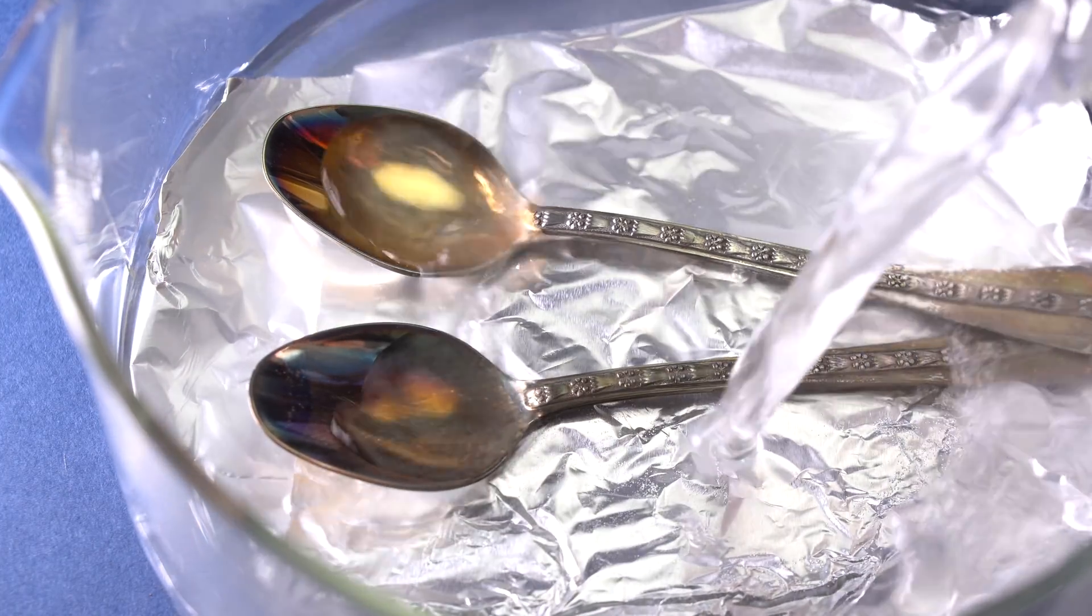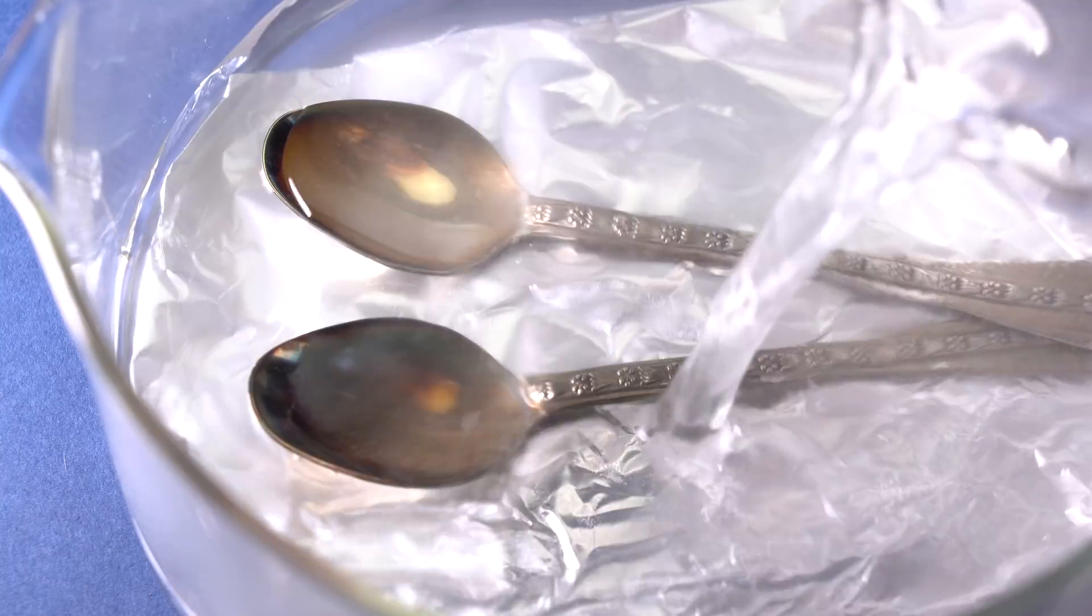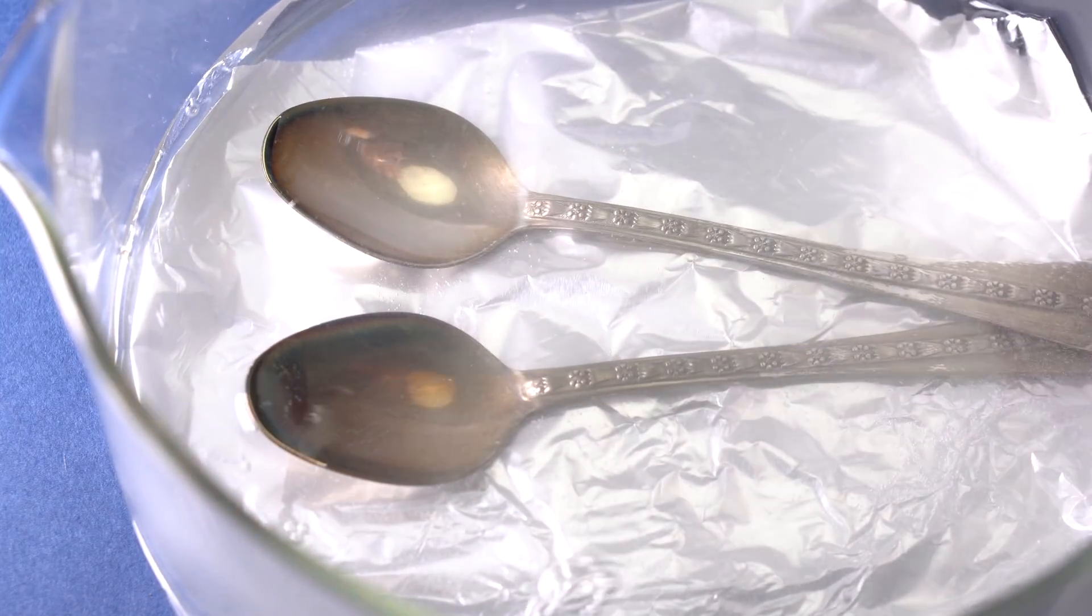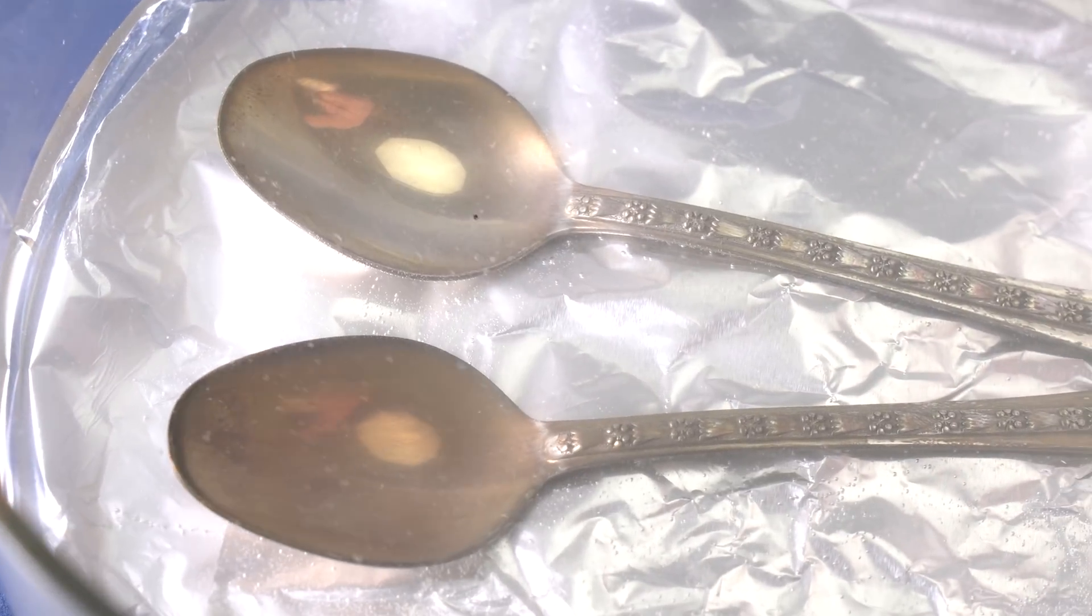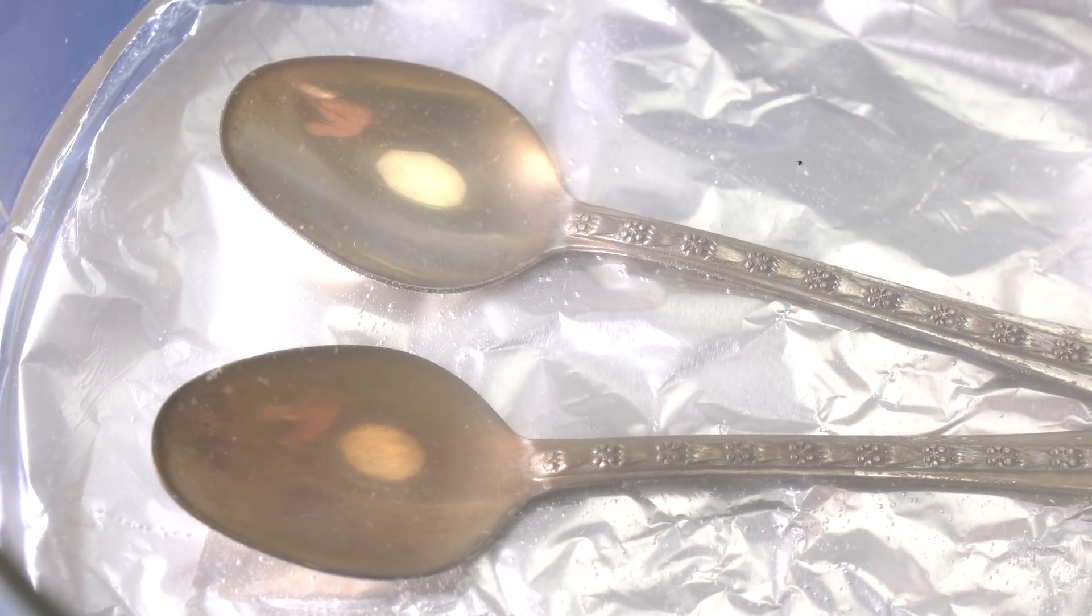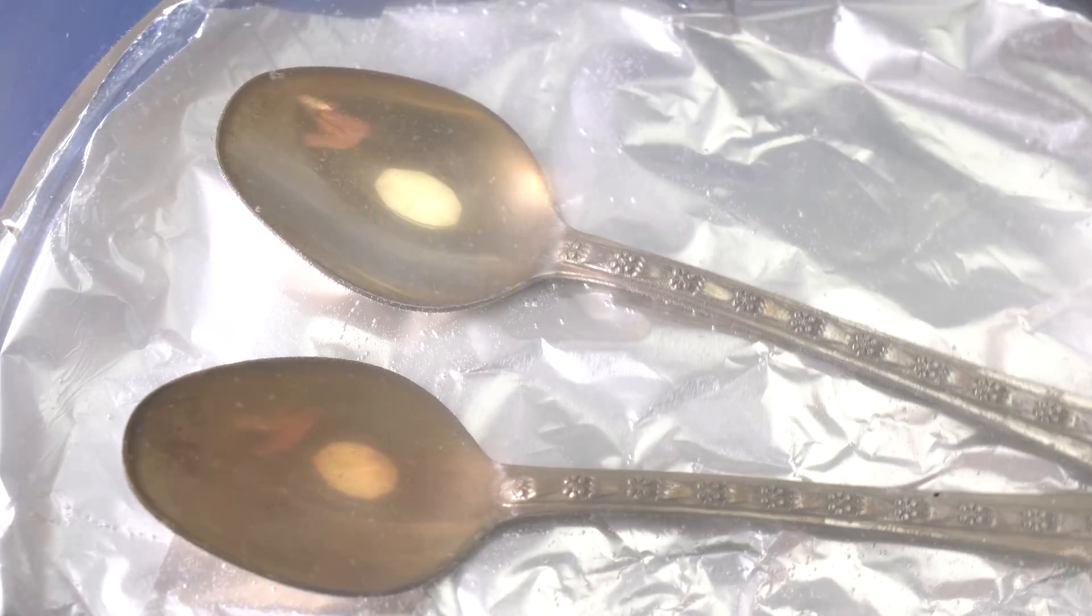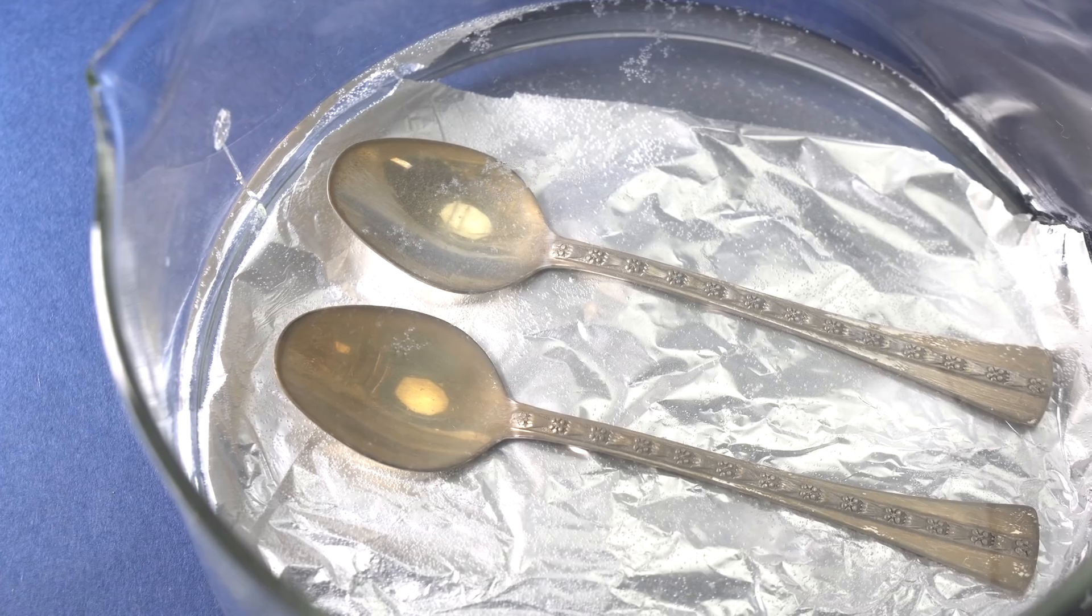I am soaking the silver spoons in this solution and we can see how quickly the tarnish disappears from the spoons. Here, in this simplest galvanic cell, aluminum reduces silver in the weak alkalized solution, which conducts electrons from one metal to the other very well.